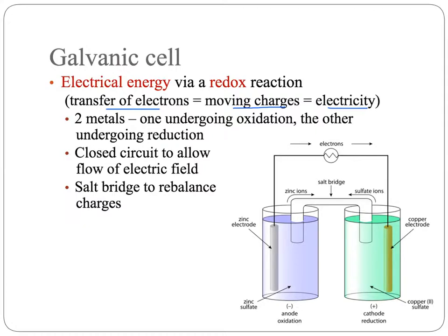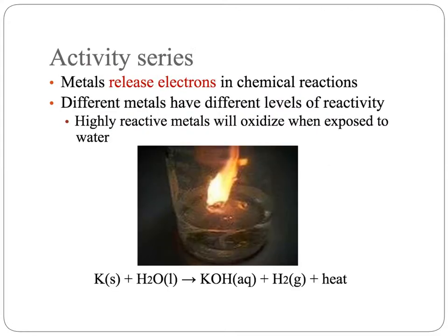To create a galvanic cell you need a couple things. You need two metals, one which can undergo oxidation while the other one is undergoing reduction. You need some way to connect these two metals through a closed circuit to allow the flow of the electrical field by a transfer of electrons. And then you need something to help rebalance the charges, either a salt bridge or a porous plate between the two sections that will allow extra anions or cations to move. But before we get into the details of the galvanic cell we need to talk a little bit about the activity series.